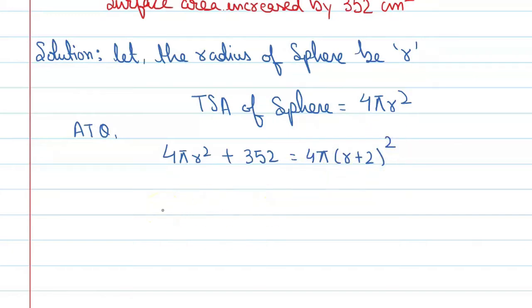Let's start solving this question. The calculation will be: 4πr² + 352 = 4π(r² + 4 + 4r), which expands to 4πr² + 352 = 4πr² + 16π + 16πr.